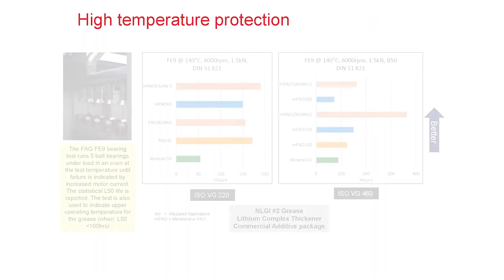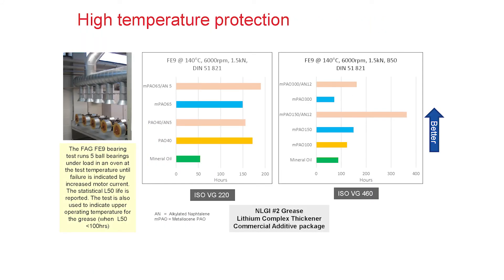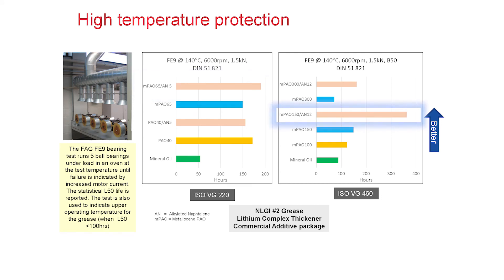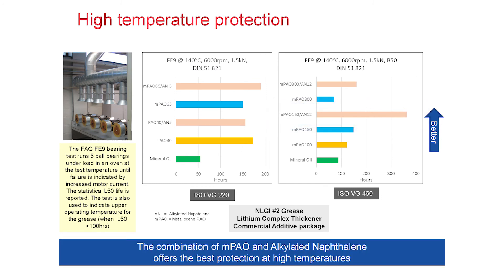Now let's switch to high-temperature protection. When running the FE9 test at 140 degrees C at 600,000 RPM, 1.5 kN, according to test DIN 51821, we see that a combination of high-viscosity MPAO and alkylated naphthalene — which provides oxidative stability — boosts FE9 performance significantly for both the ISOVG 220 and ISOVG 460 greases. We can conclude that in lithium-complex greases, a combination of high-viscosity MPAO and AN can improve both low- and high-temperature performance.